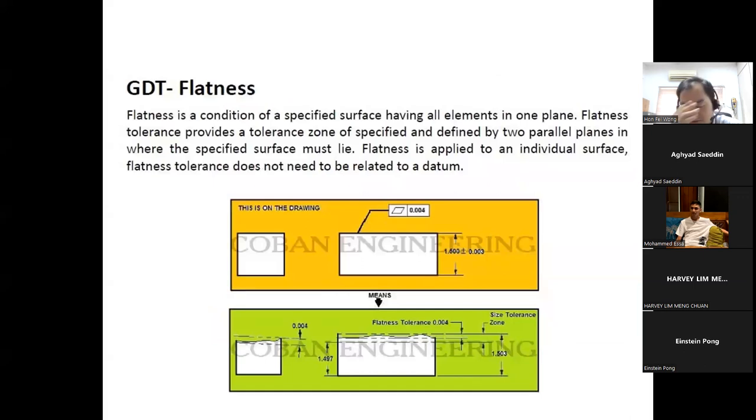Flatness, I think you have done it in your tutorial number 5. Flatness is the condition of a specified surface having all elements in one plane. Flatness tolerance defines a tolerance zone of specified width defined by two parallel planes within which the specified surface must lie. Flatness is applied to an individual surface. Flatness tolerance does not need to be related to a datum.